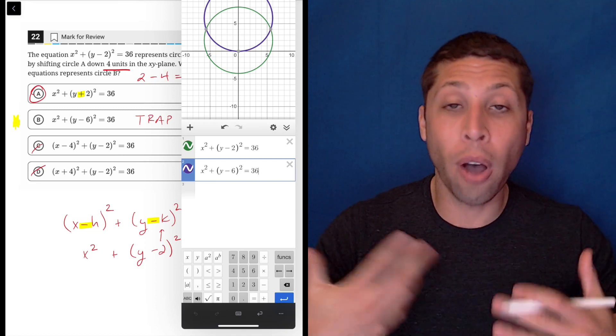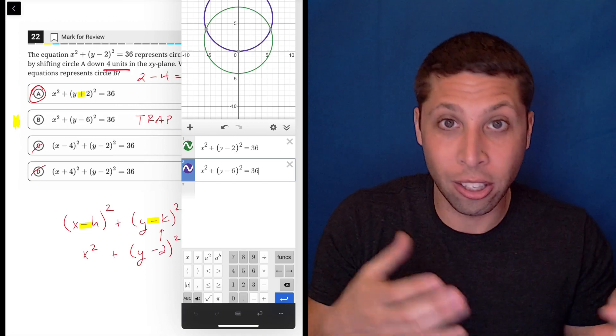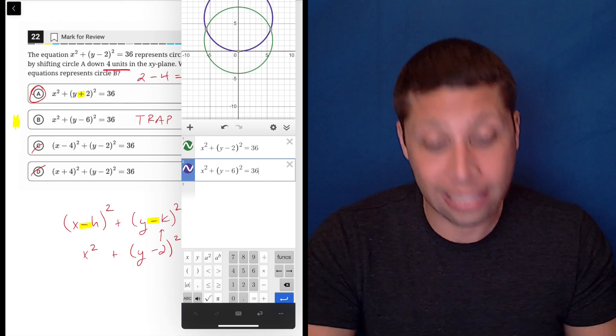So if you thought that B was going to be right, a simple typing into the Desmos calculator can just show you the trap without having to think about the actual math. You just see it happen and see it go wrong.